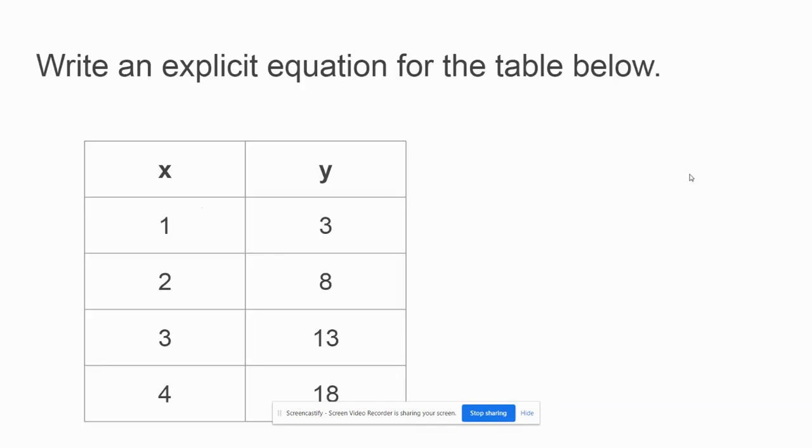Getting our minds back to arithmetic sequences, the first thing I need to look at is how the input values are changing and how the output values are changing. I see that for every 1 that I go up in x, I'm going up 5 for y.